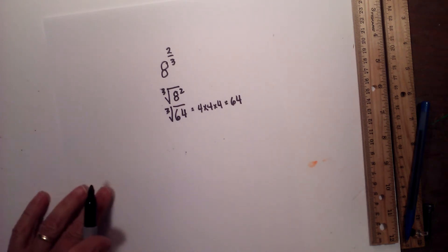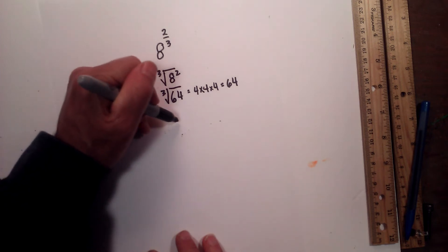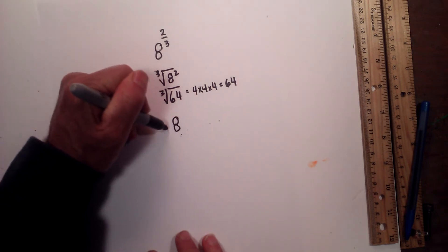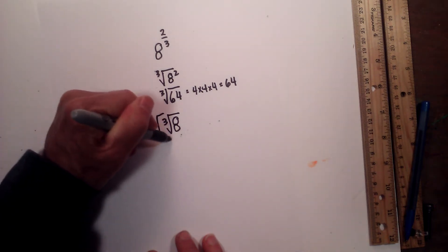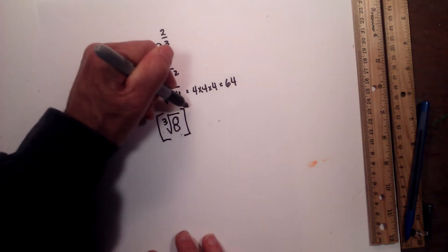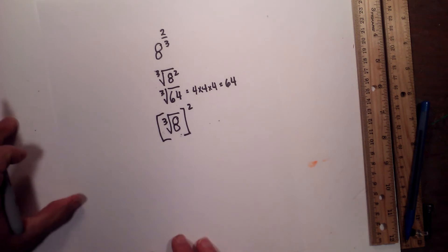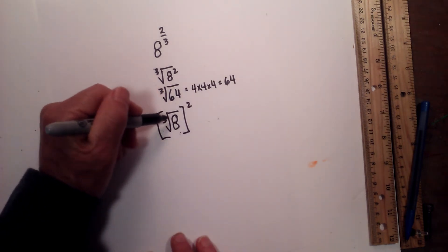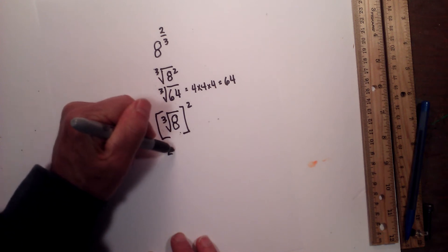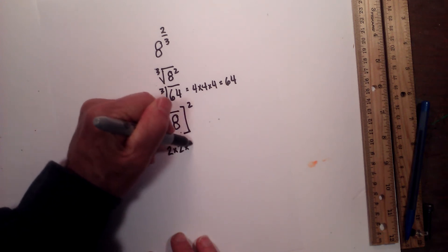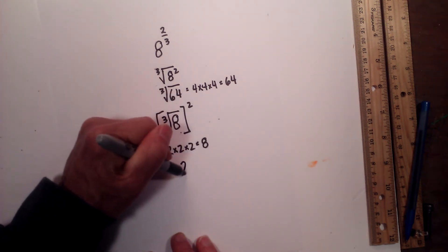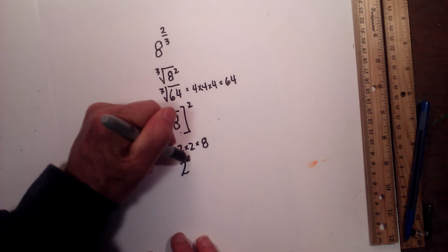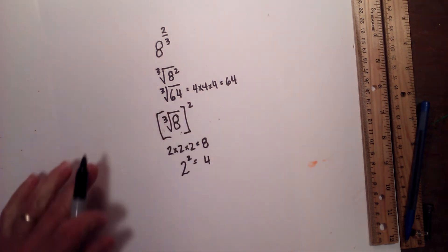But another way you can solve this — which personally I think is a little bit easier — is like this: take the same radicand and root index, but take the answer to the second power afterward. First, what number multiplied by itself 3 times is equal to 8? That's 2 times 2 times 2, equal to 8. So the cube root of 8 is 2, and now I square 2, which is 4.